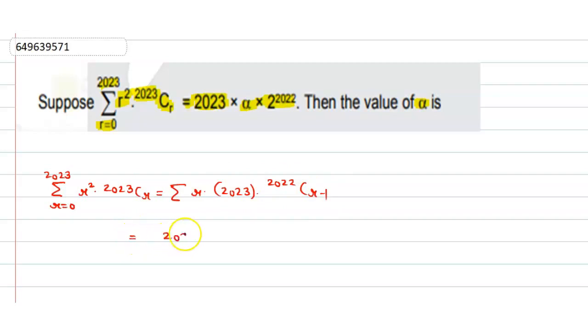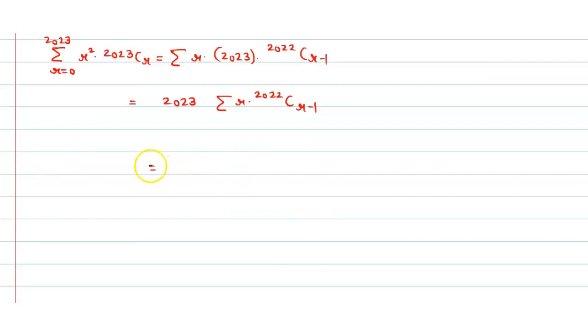So how we will solve it? It should be 2023 and sigma of r times 2022 C_(r-1), then it should be equal to here 2023 times sigma r equals 1 to 2023, then r minus 1 times 2022 C_(r-1).